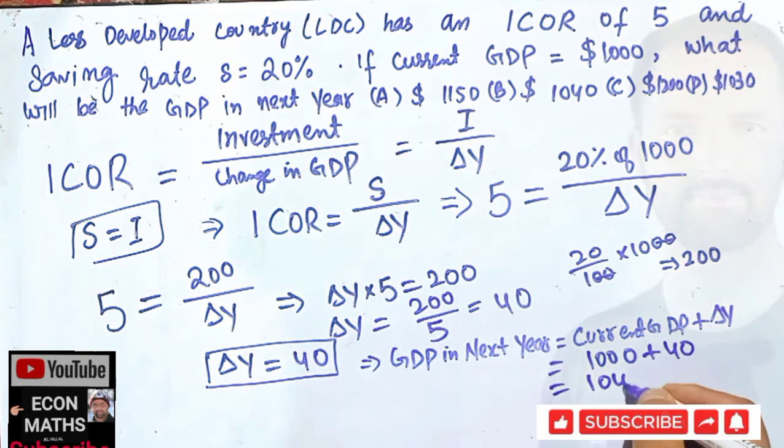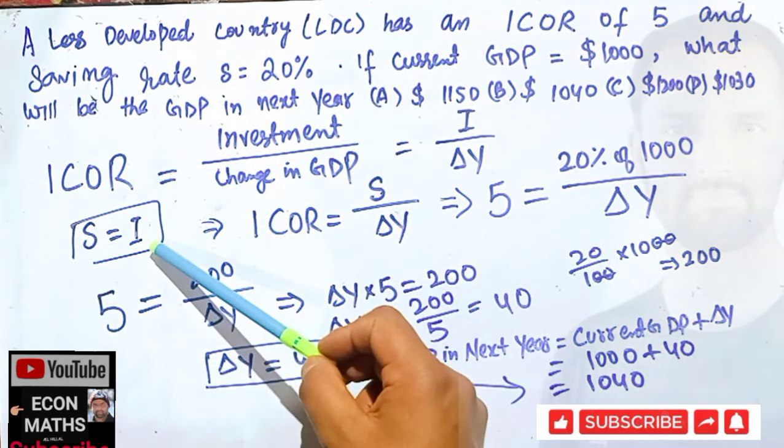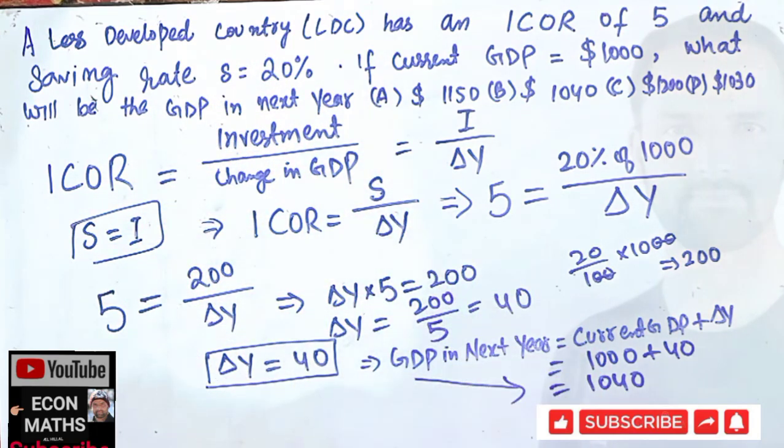change in GDP which we calculated comes out to be 40. So this comes out to be 1040. That means next year our GDP will be $1040. I hope I make myself clear in this video. We just need to use this very relationship that whatever is saved is invested, then we can solve this very question. Thank you.